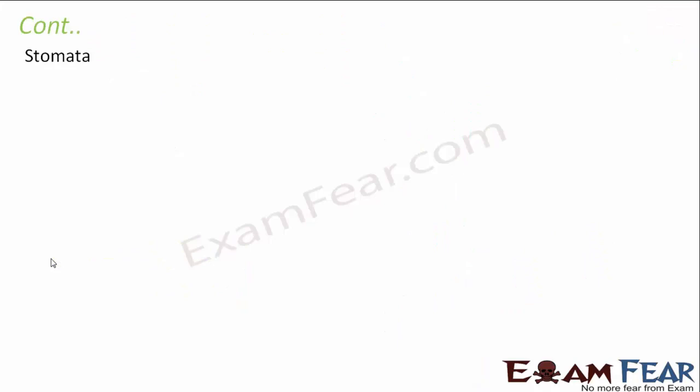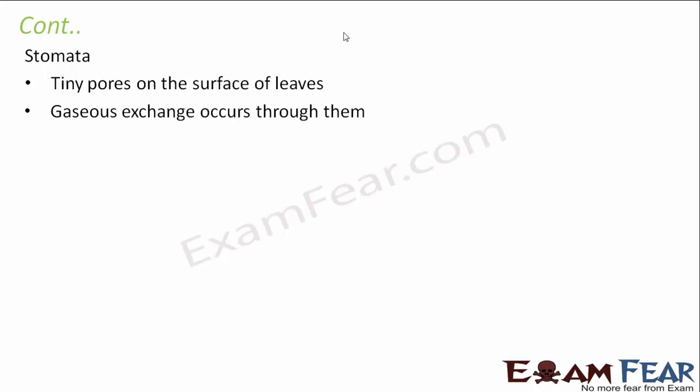So what are stomata? These are the tiny pores present on the surface of leaves. Chlorophyll is present inside the chloroplast when we look at the cross section of a leaf, but stomata are present on the surface of a leaf — extremely tiny pores which are not visible with the naked eye. Gaseous exchange occurs through them, so this is how the plant actually absorbs carbon dioxide from the atmosphere. Gaseous exchange can also happen through roots and stem, but the majority happens through stomata.